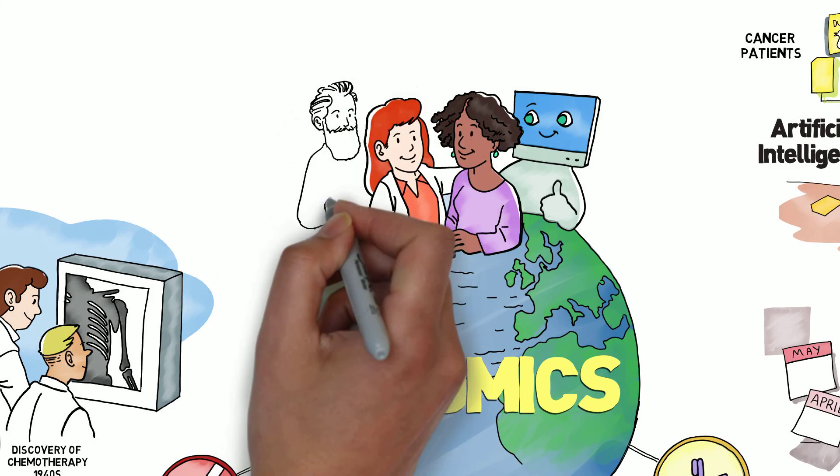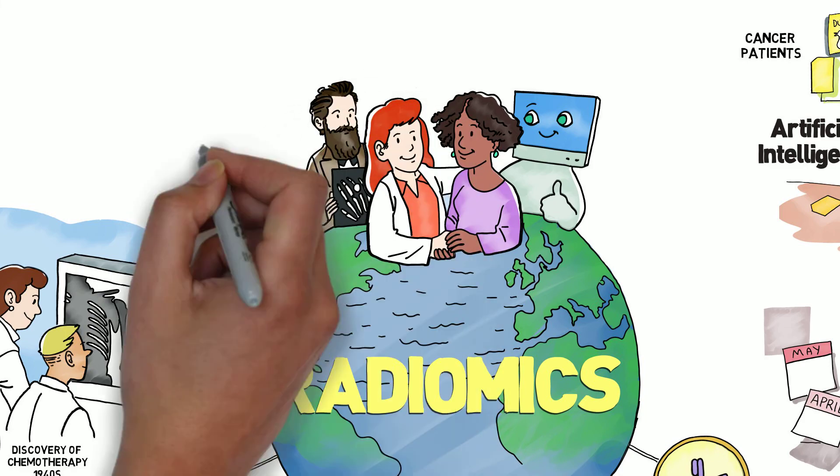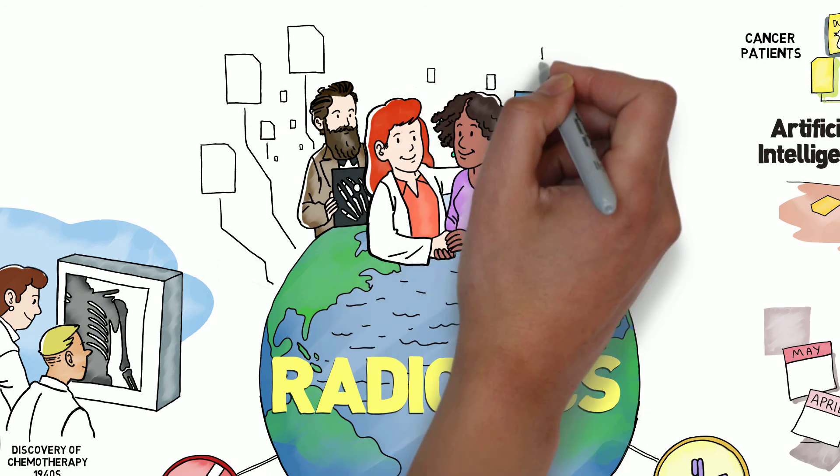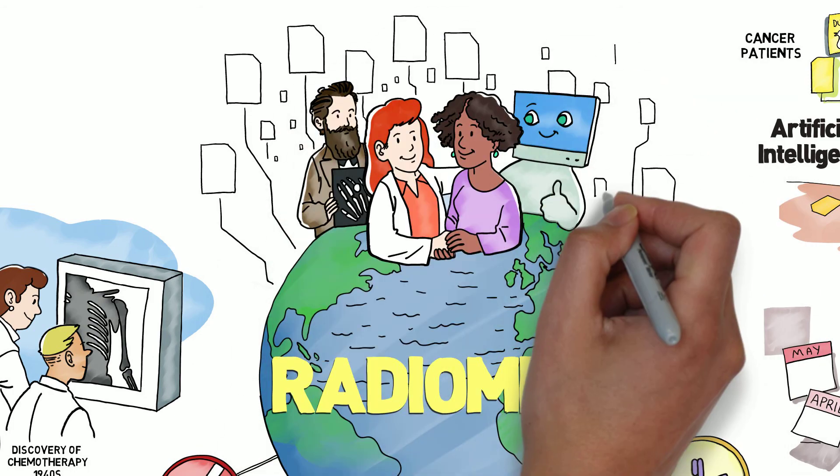We've come a long way since we measured tumors with a ruler. The hidden information we collected along with those measurements holds the key to the next revolution in cancer treatment.